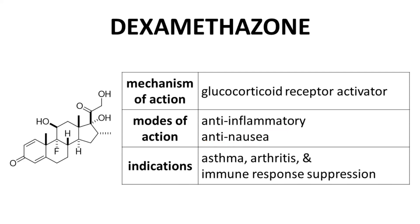The medical use of dexamethasone results mostly around its anti-inflammatory properties, and it is used to treat asthma, arthritis, and even immune response suppression. Dexamethasone has multiple indications.